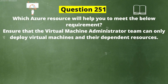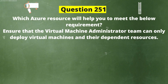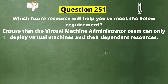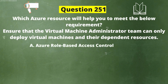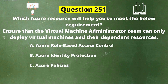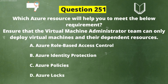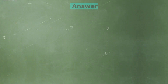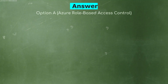Next question. Which Azure resource will help you ensure that the virtual machine administrator team can only deploy virtual machines and their dependent resources? Option A: Azure Role Based Access Control. Option B: Azure Identity Protection. Option C: Azure Policies. Option D: Azure Logs. The correct answer is Option A, Azure Role Based Access Control.